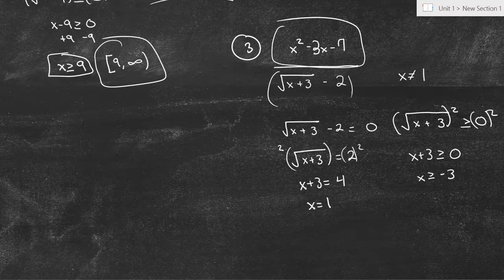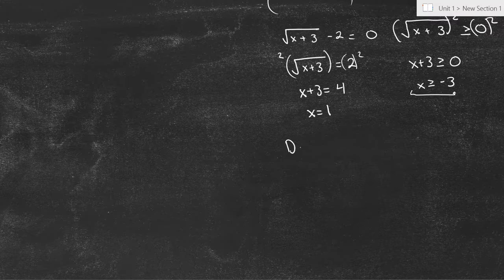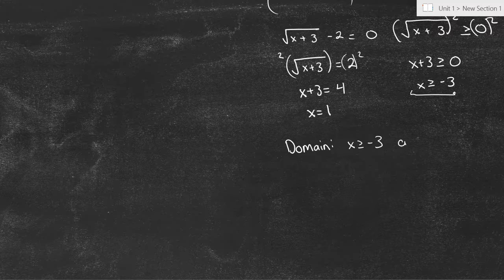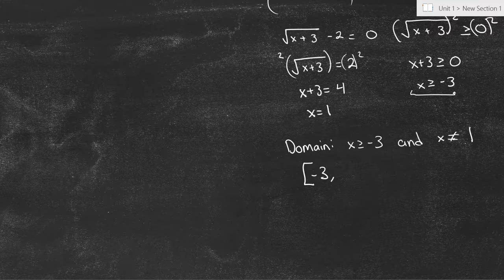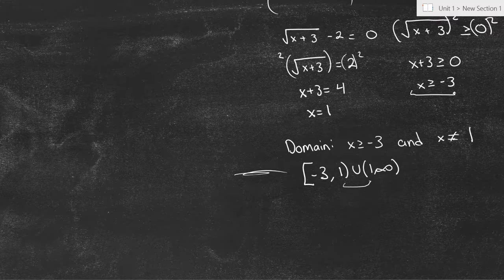So that's the restriction from the radical. Combined with the denominator restriction, we have: the domain is x is greater than or equal to negative 3, and x does not equal 1. In interval notation: starting at negative 3 with a bracket, going up to 1 (which it cannot equal, so a parenthesis), union 1 to infinity. We can't be less than negative 3, and we can't equal 1, but every other number is fine.